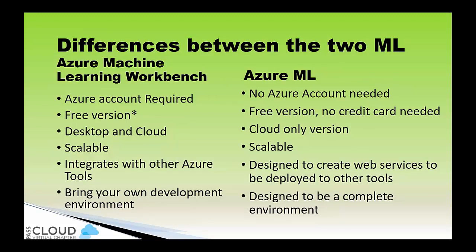So what are the differences between the two products? With Machine Learning Workbench, you have to have an Azure account. You download it from Azure — you must have an Azure account. Now, granted, you can get a free Azure account, or an Azure account with Visual Studio, so there are ways of doing it without costing you money. With Azure ML, you could use Azure ML Studio — it was really the only free Azure tool there was. You can still use it, it's a great place to learn, and you don't even need to give them a credit card.